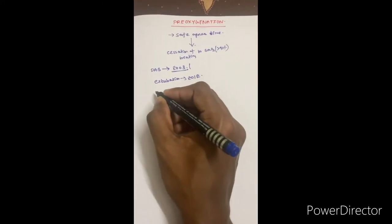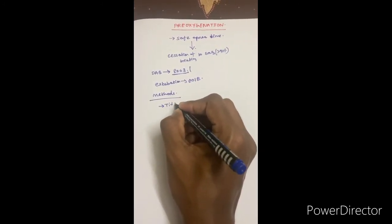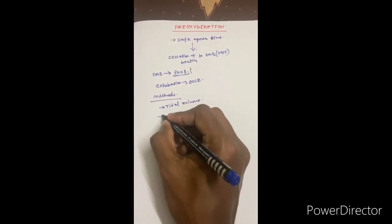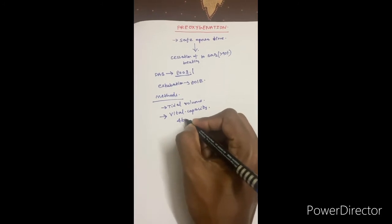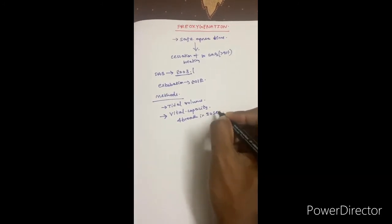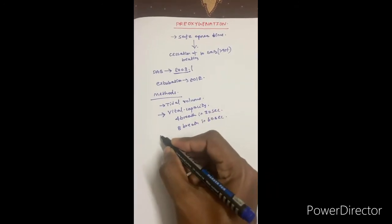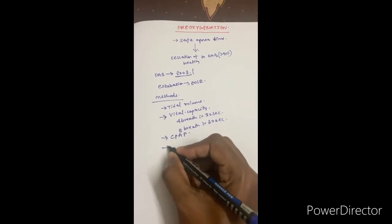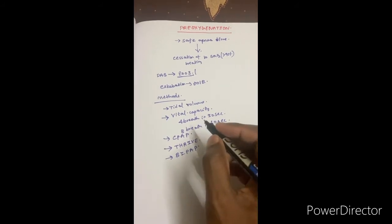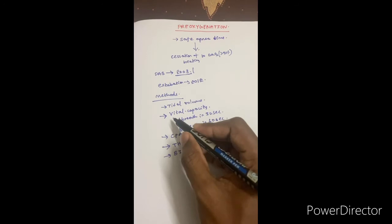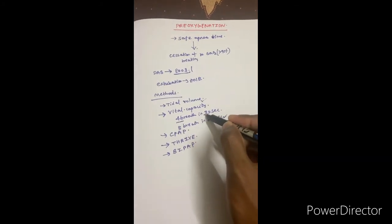The methods to pre-oxygenate patients include tidal volume capacity breaths or vital capacity breaths — either 4 vital capacity breaths in 30 seconds, or 8 breaths in 60 seconds. Other methods include CPAP mode, which is useful in obese patients, THRIVE, high-frequency ventilation, and BiPAP. The most commonly used method is 8 vital capacity breaths in 60 seconds, which is superior compared to the 4-breath-in-30-seconds technique.